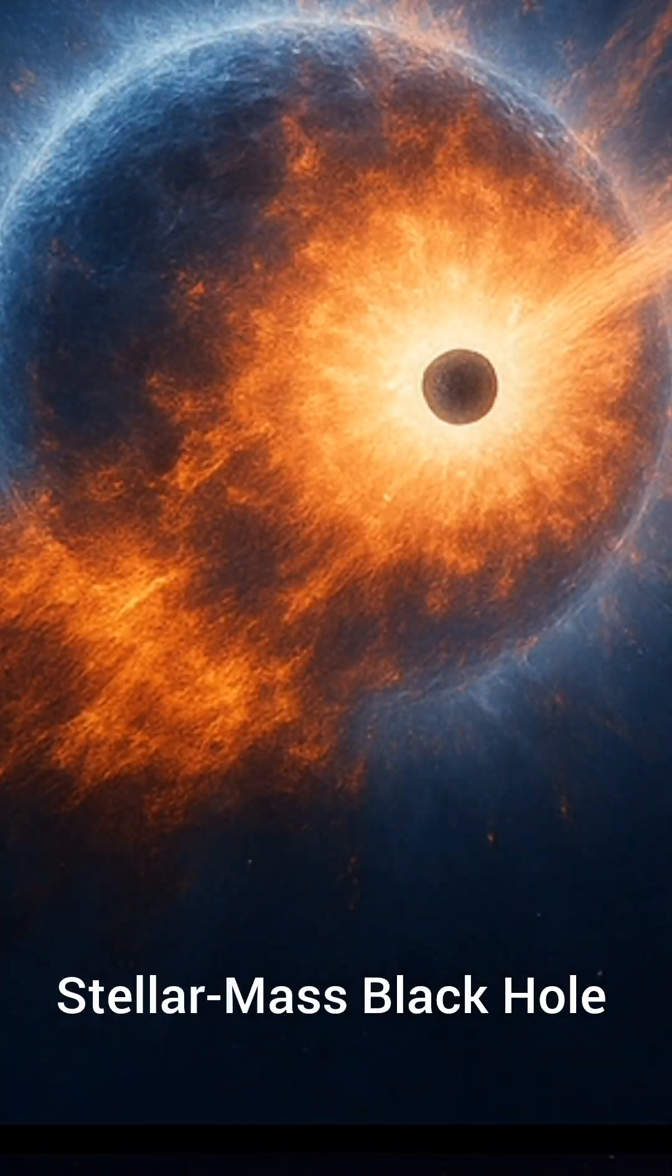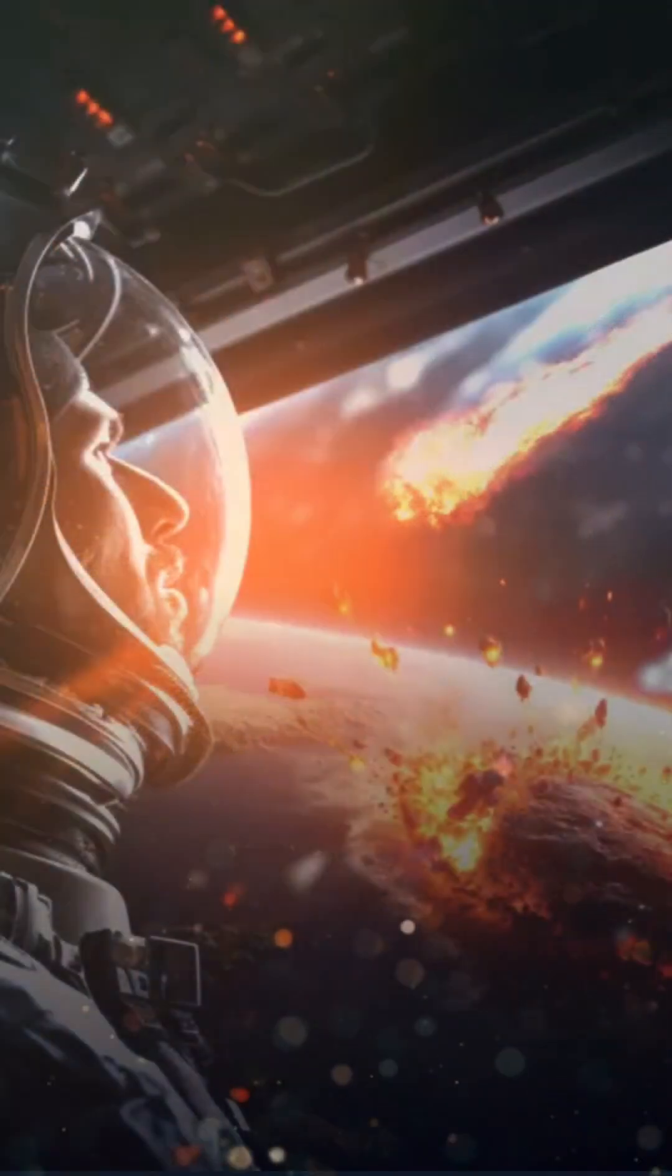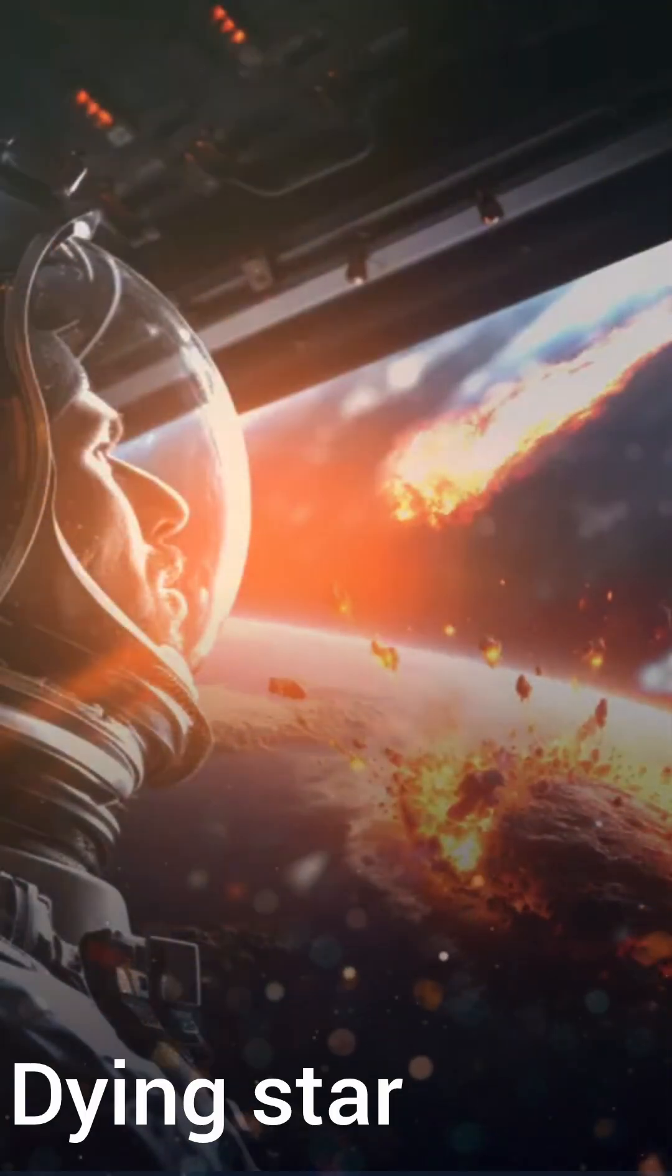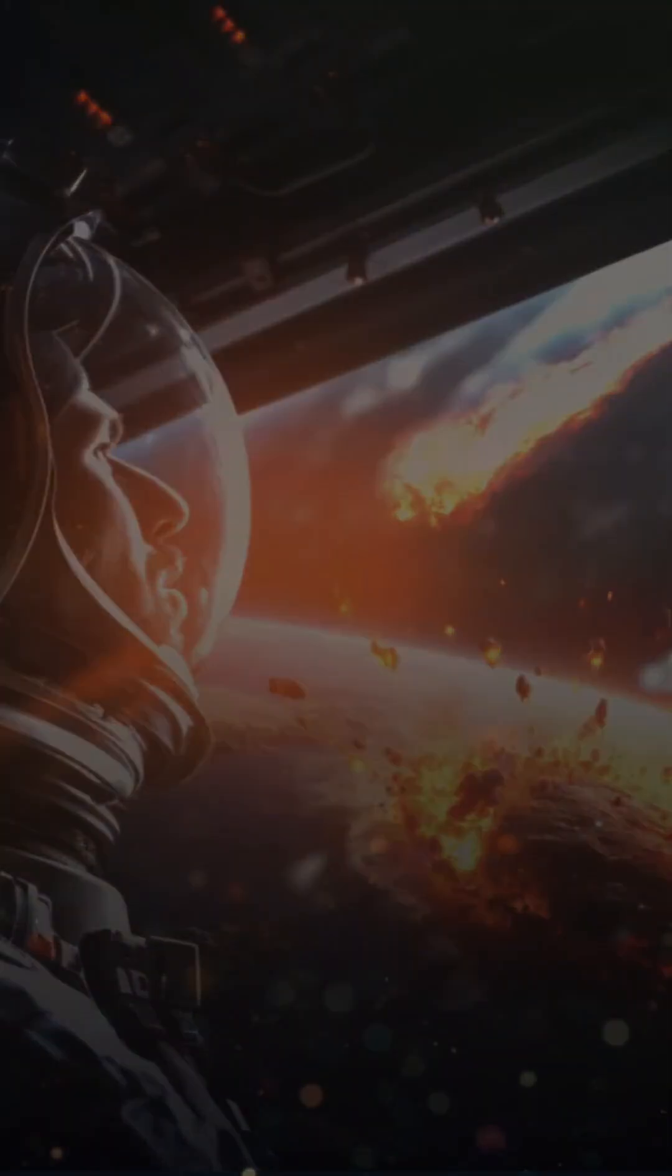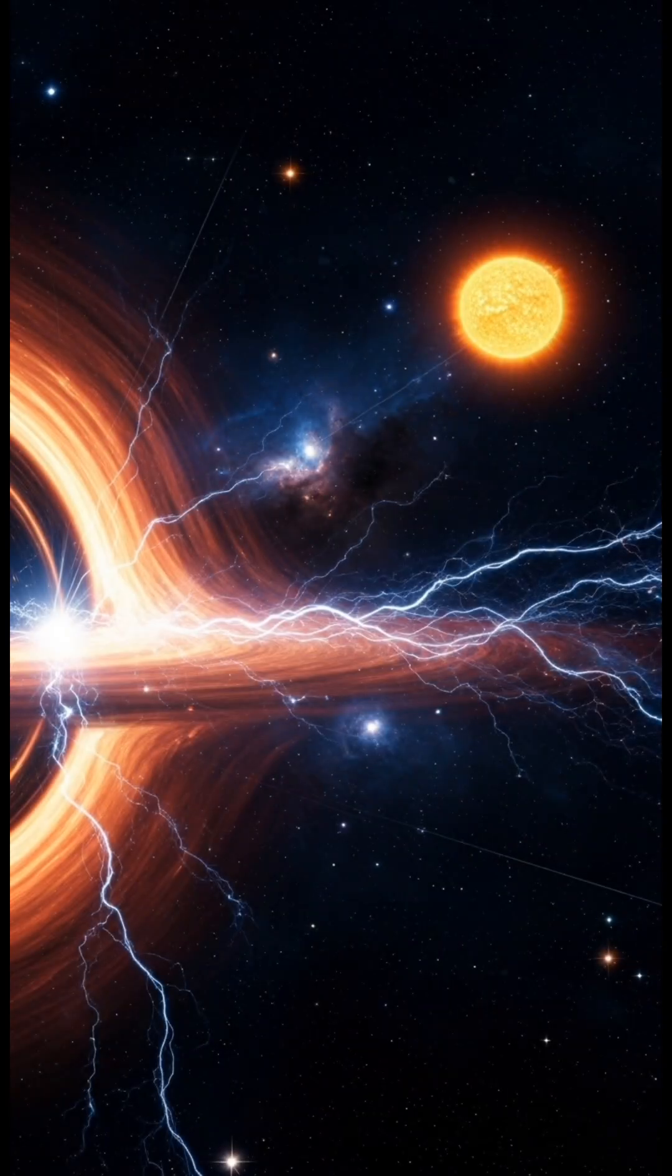Let's start with the most common type, stellar-mass black holes. These are born when a huge, massive star dies and runs out of fuel. Its core collapses, causing a giant explosion called a supernova. And what's left behind is the black hole.